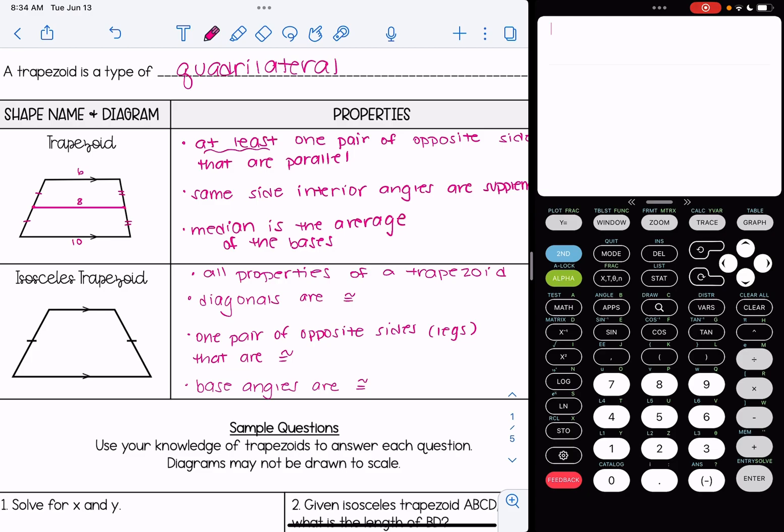...the diagonals are congruent to one another. One pair of opposite sides, called the legs, are congruent. You can see those marked off with the tick marks in the picture. And the base angles are congruent.